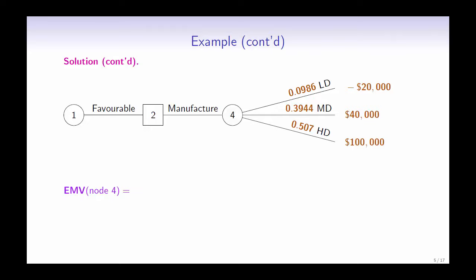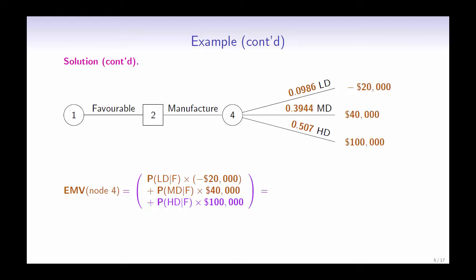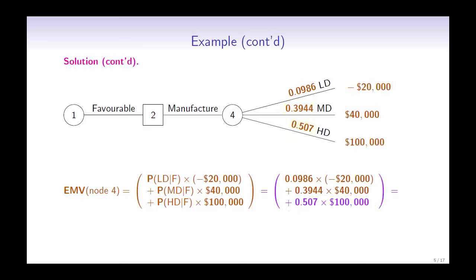It is equal to the probability of a low demand given a favorable condition times the projected payoff when there is a low demand, plus the probability of a medium demand given a favorable condition times the projected payoff when there is a medium demand, plus the probability of a high demand given a favorable condition times the projected payoff when there is a high demand. Plugging in the values, we have 0.0986 times negative 20,000 plus 0.3944 times 40,000 plus 0.507 times 100,000. This gives us an expected payoff of $64,504.